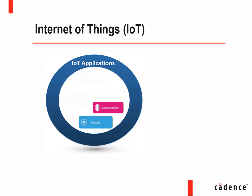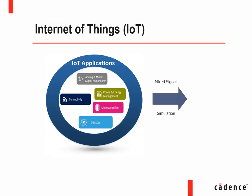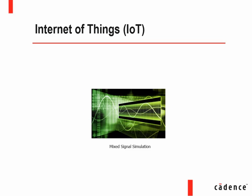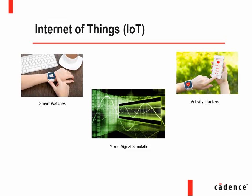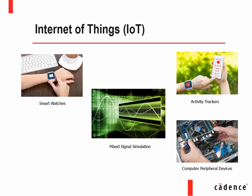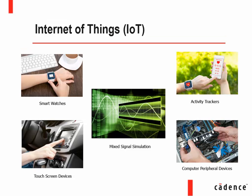Microcontrollers, sensors, power and energy management, and analog and mixed signal components will heavily use mixed signal simulation in the coming years. Wearable devices such as smart watches and activity trackers, computer peripheral devices, and touch screen devices are some of the examples of Internet of Things.